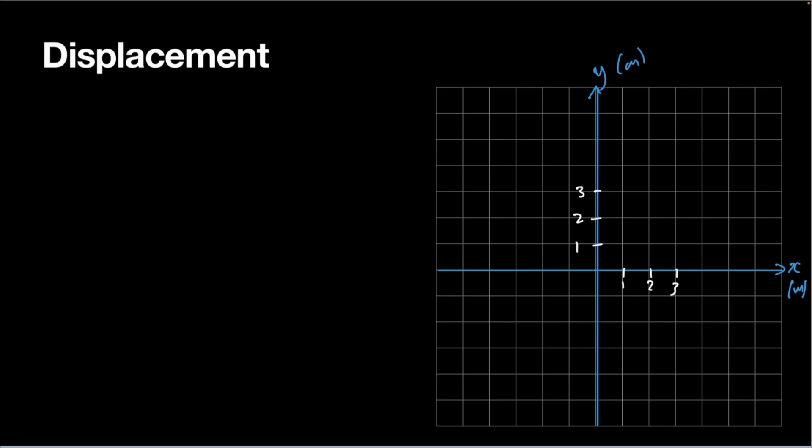So imagine that caret starts at a position of 2, 1. So I'm going to say that the initial position, so I'll put a little i for initial, is equal to 2, 1 meters. So if I just draw that on the graph with a dot, that would be here, x value of 2, y value of 1.